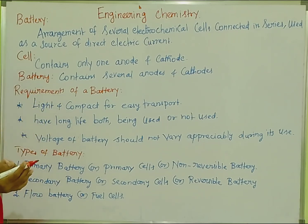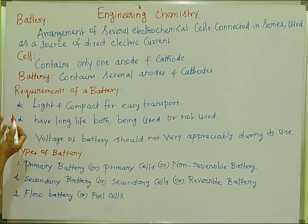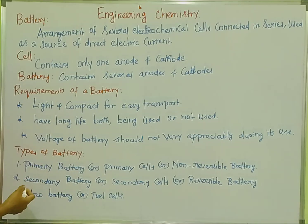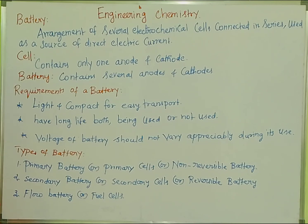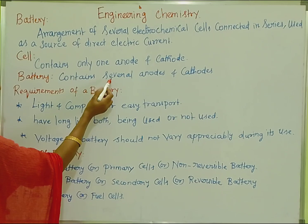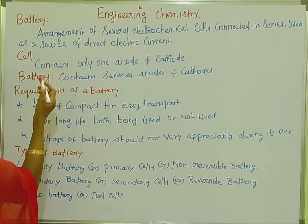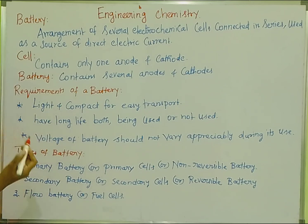The battery is an arrangement of several electrochemical cells connected in series. The battery contains several anodes and cathodes. This is the basic introduction.